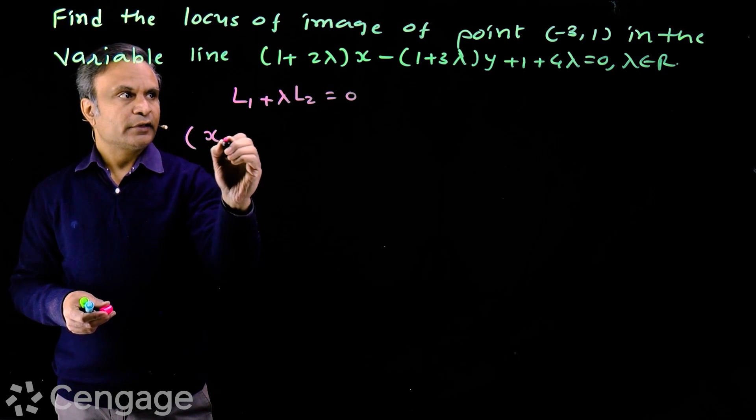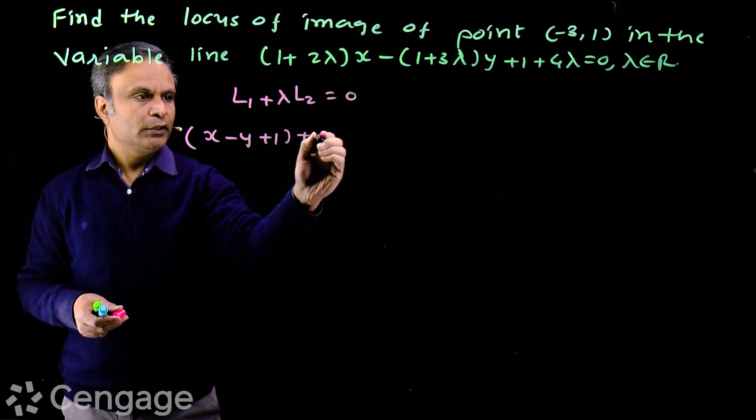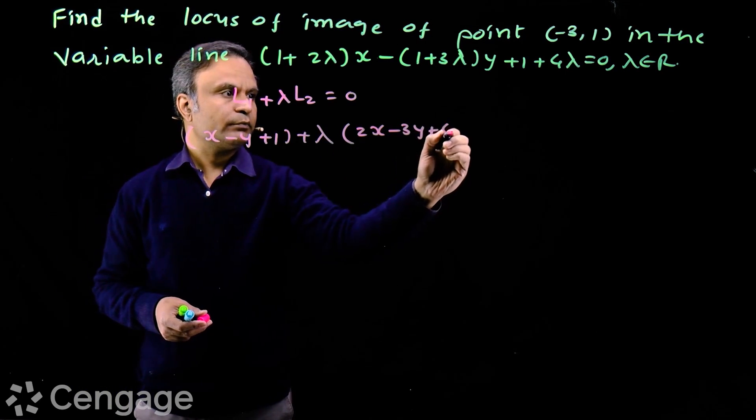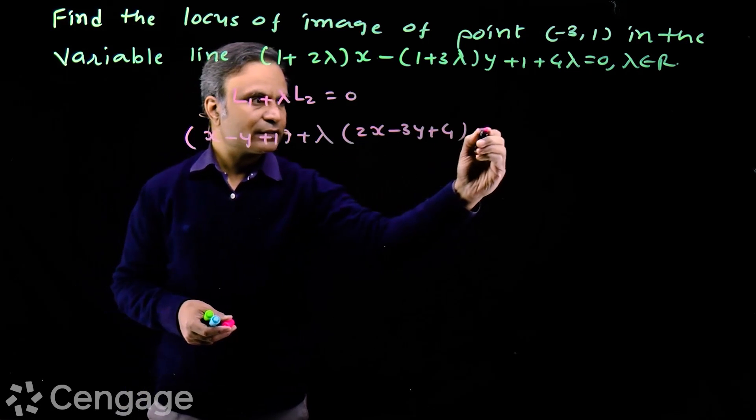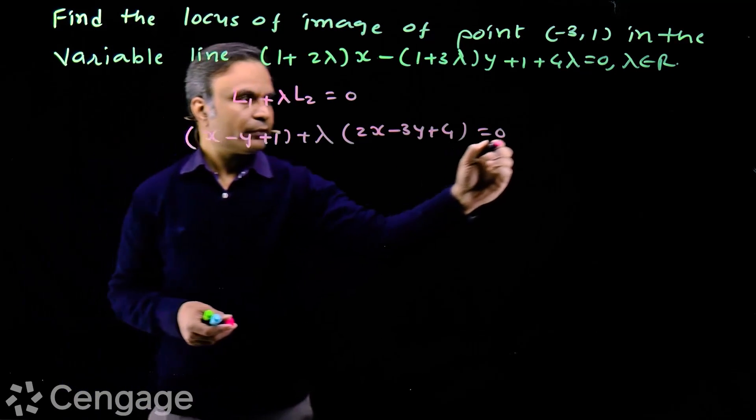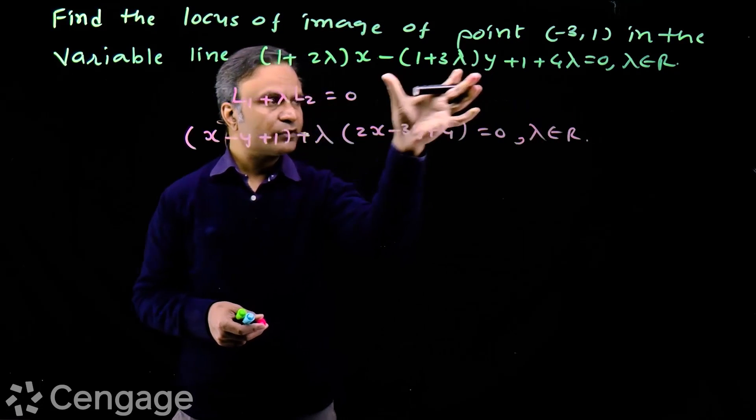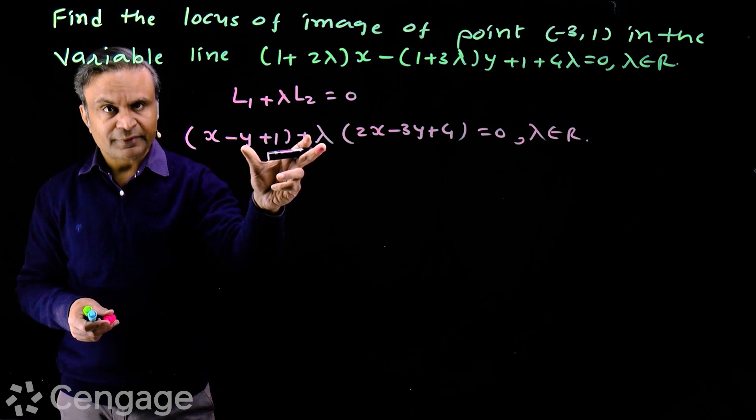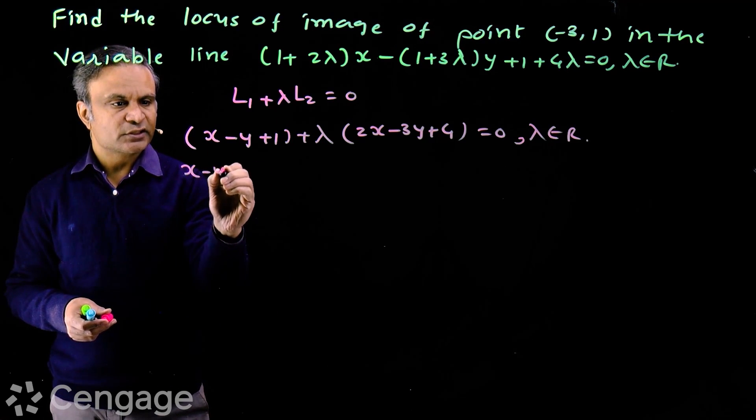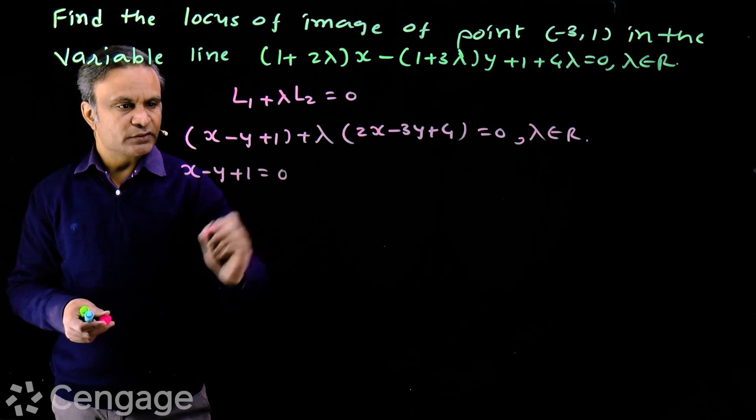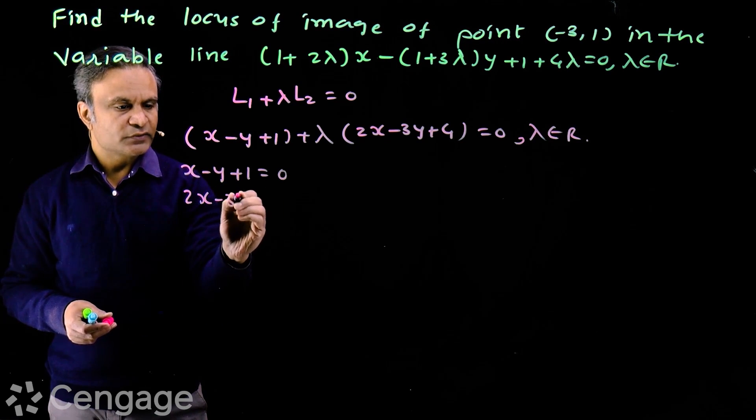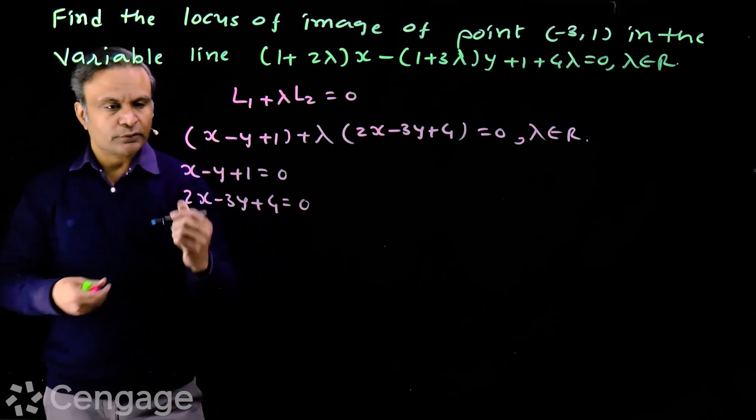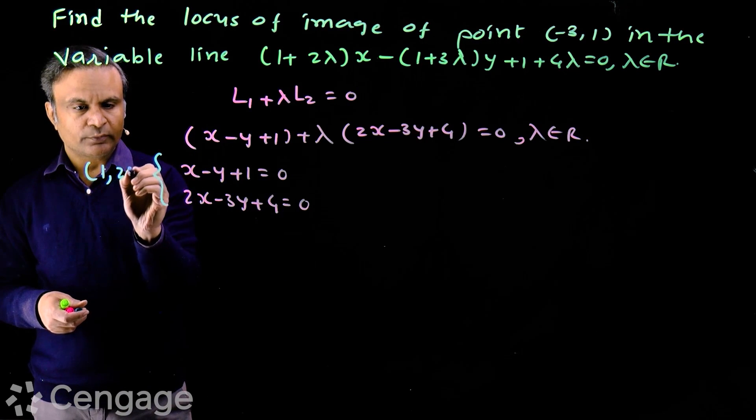We have (x - y + 1) + λ(2x - 3y + 4) = 0, where λ belongs to R. Now all the lines which belong to this family are concurrent at point of intersection of lines x - y + 1 = 0 and 2x - 3y + 4 = 0, and point of intersection of these two straight lines is (1, 2).